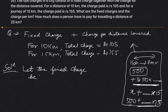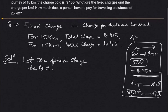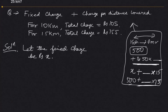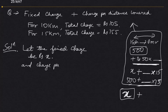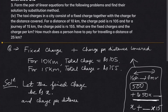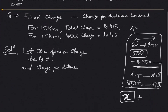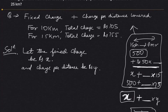Let the fixed charge be rupees x, and let the charge per distance, or charge per kilometer, be rupees y. So x is the fixed charge and y is the per kilometer rate.